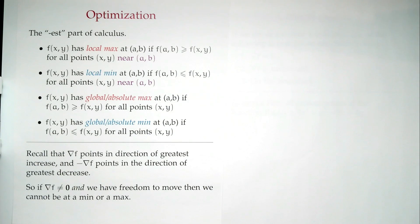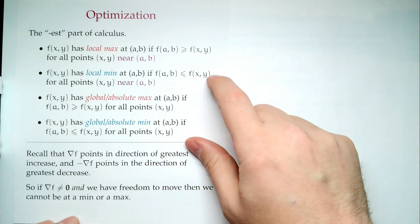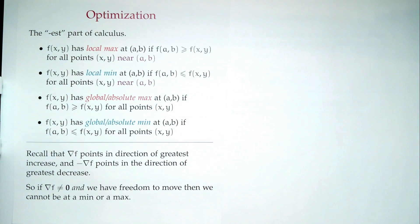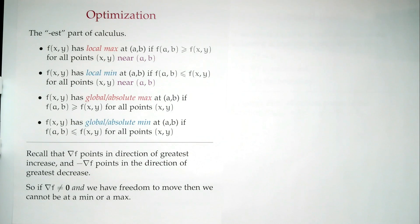When we talk about local, we're always saying: nearby, I'm either the biggest thing there is or the smallest thing there is. Ties are okay. Now what about the global? The global says you don't even have to check nearby — you look anywhere the function is defined, over the whole domain. If this point gives the largest possible value, it's the global, sometimes called the absolute max.